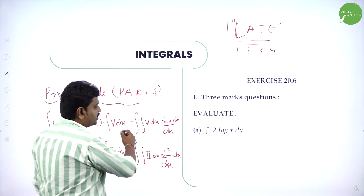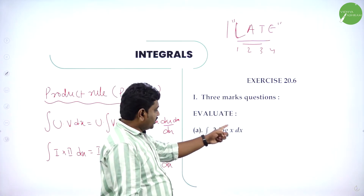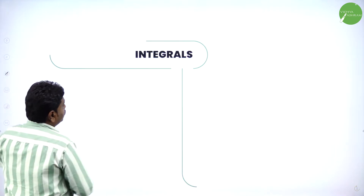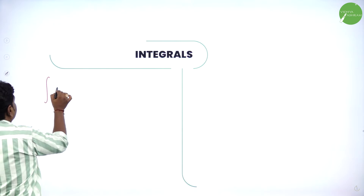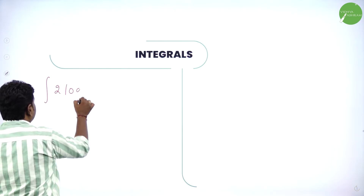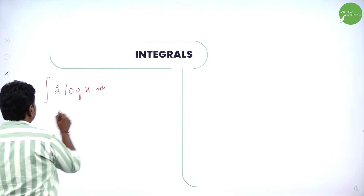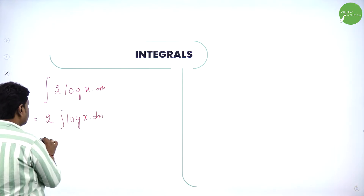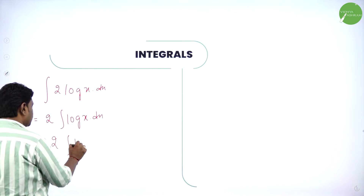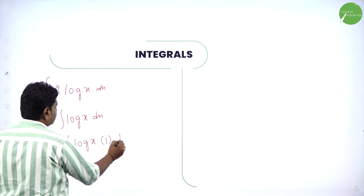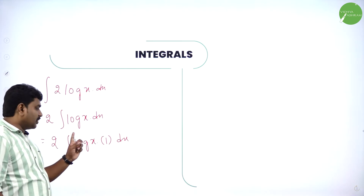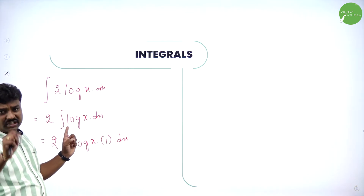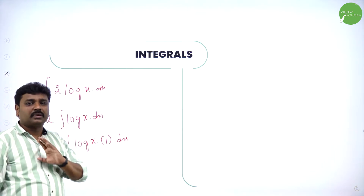Integration by parts — make a note. Now integrating 2·log(x) dx. We can integrate by parts. Since 2 is a constant I can take it out: integration of log(x) dx. Here I have only one function, so I write it as integration of log(x) into 1 dx. Can I write log(x) as log(x)·1? Yes — log(x)·1 is log(x).